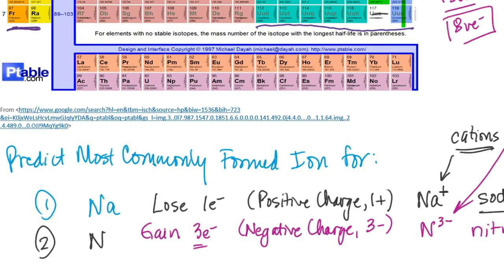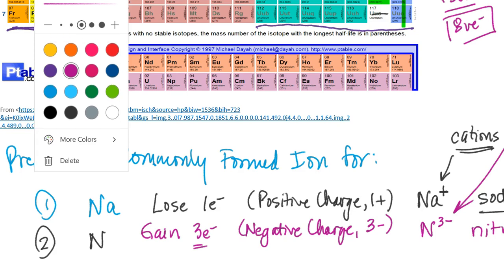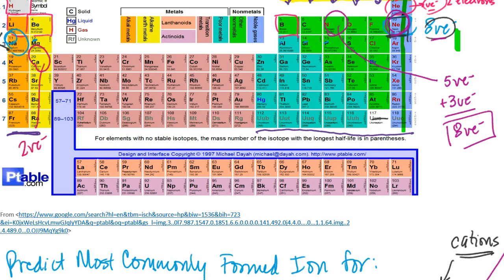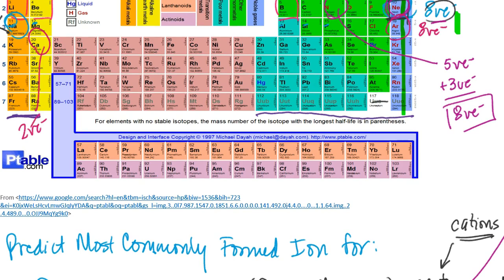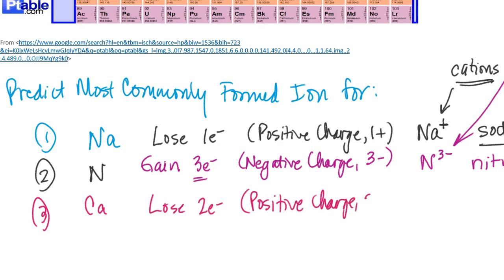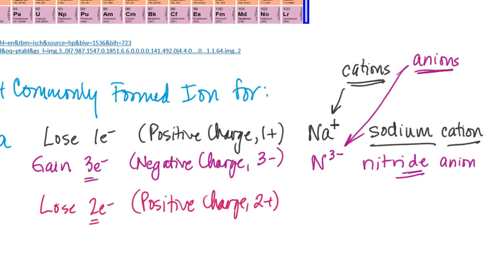Let's do one more: calcium. Calcium is in group 2, so it has 2 valence electrons. Its nearest noble gas is argon. To achieve argon's 8-valence-electron configuration, calcium must lose its 2 valence electrons. Losing 2 electrons gives a 2 plus charge, so the symbol is Ca²⁺, and since it's a cation, this is the calcium cation.